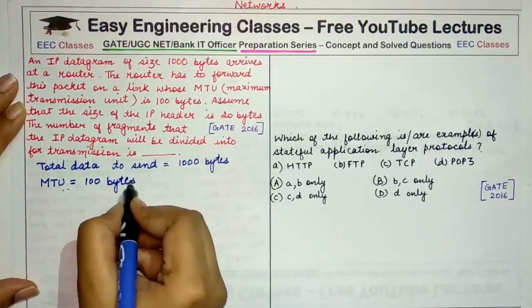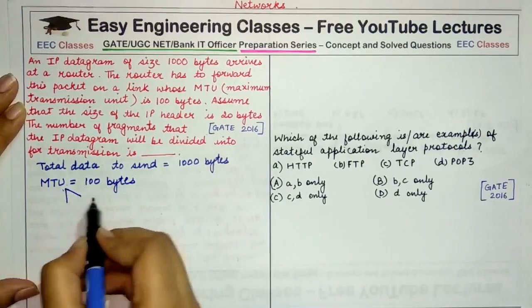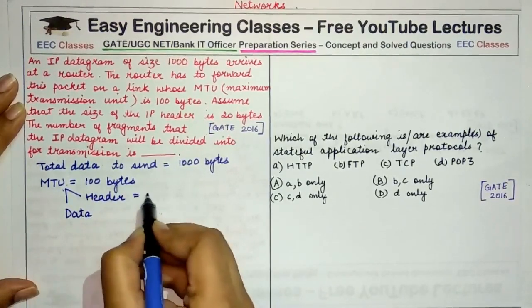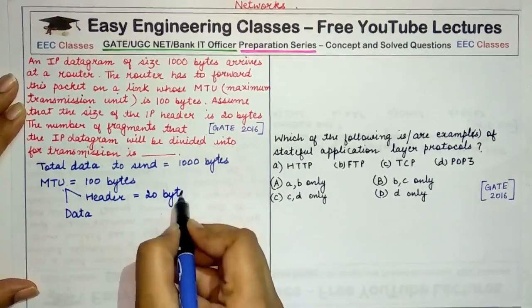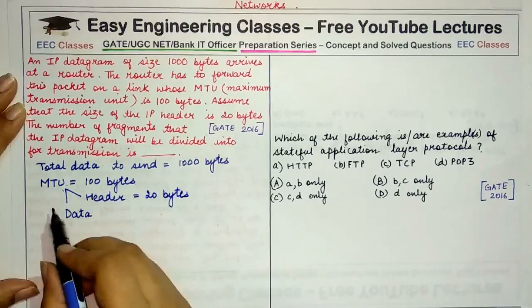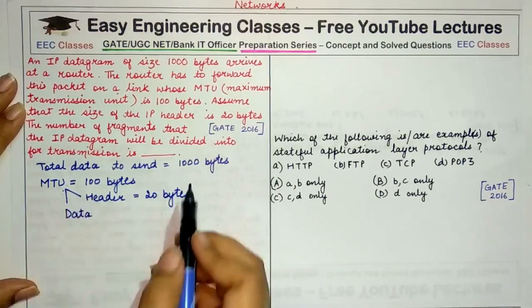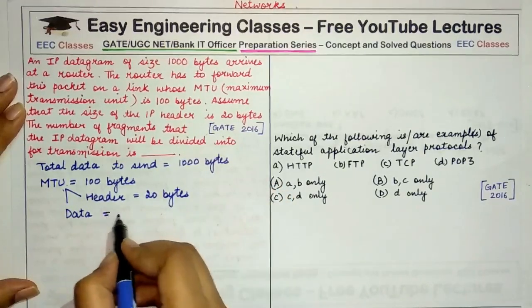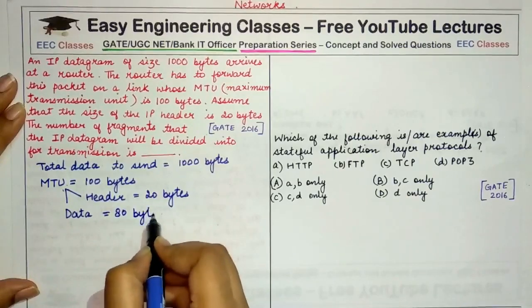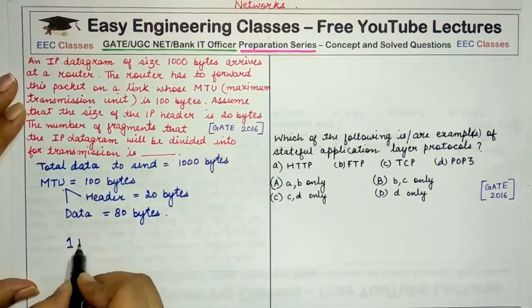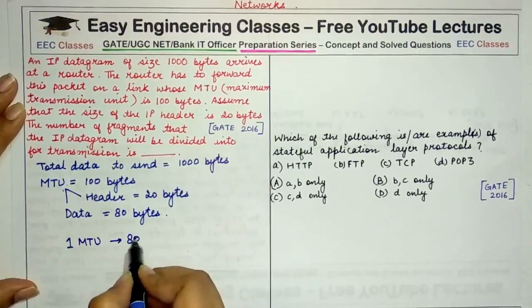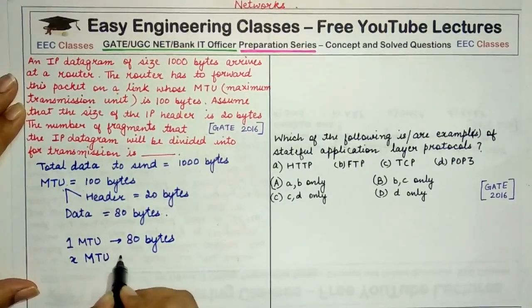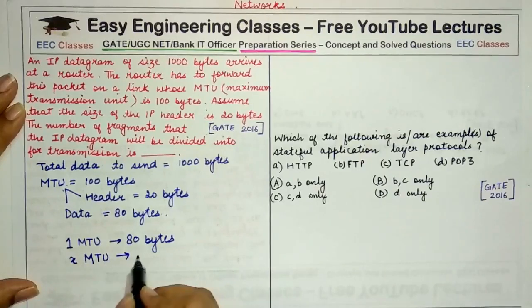Each fragment sent must have a header and a data field. The header is given to be 20 bytes, and the data field is occupied by the remaining bytes. So in each MTU we have a 20-byte header, and the remaining 80 bytes can be filled with data — each MTU carries a maximum of 80 bytes of data.